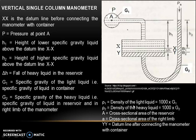Rho 1 is the density of the light liquid, which is equal to 1000 times G1. We know that specific gravity equals density of liquid divided by density of water, so density of liquid equals 1000 into G1. Similarly, rho 2 is the density of the heavy liquid, equal to 1000 into G2. Capital A is the cross-sectional area of the reservoir and small letter a represents the cross-sectional area of the right limb.